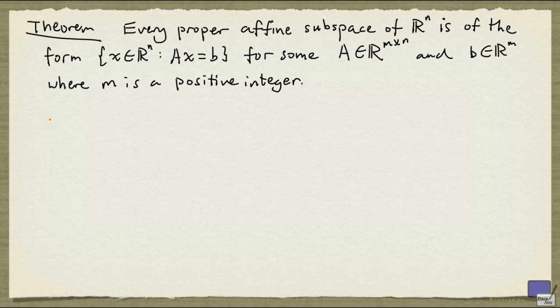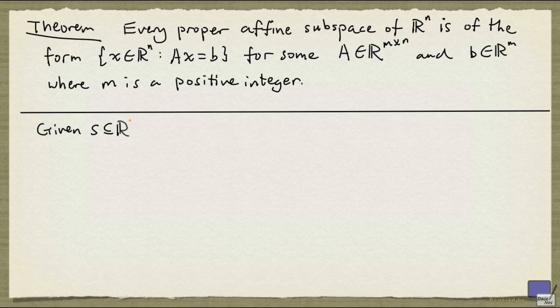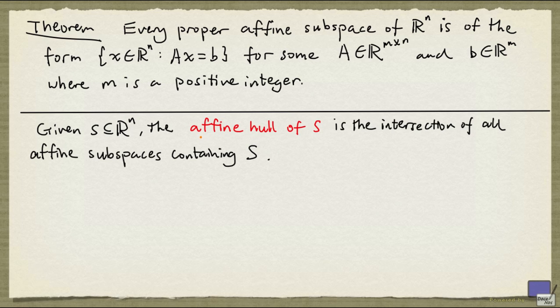There's the notion of an affine hull of a set. Given a subset of R^n, the affine hull of S is simply the intersection of all the affine subspaces containing S. It can be shown that the affine hull of a set is an affine subspace.